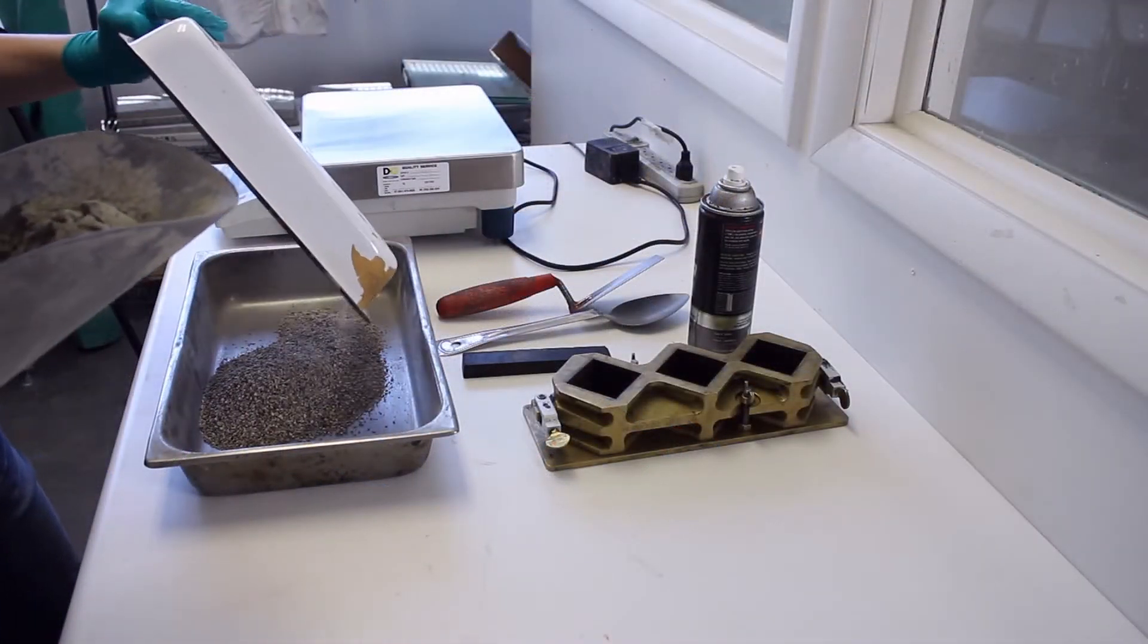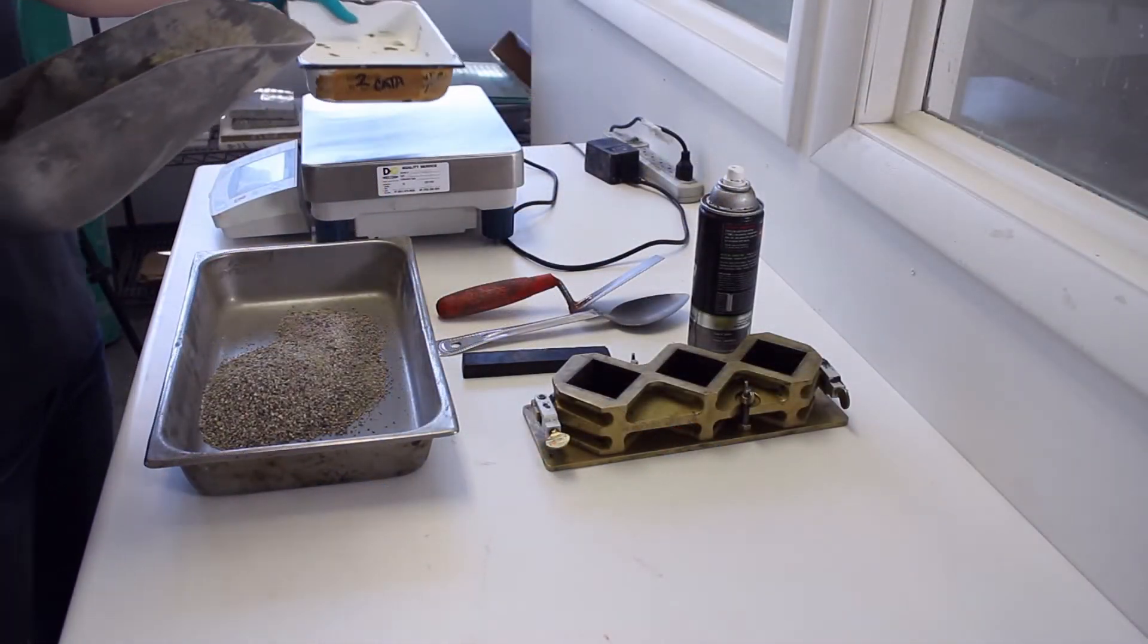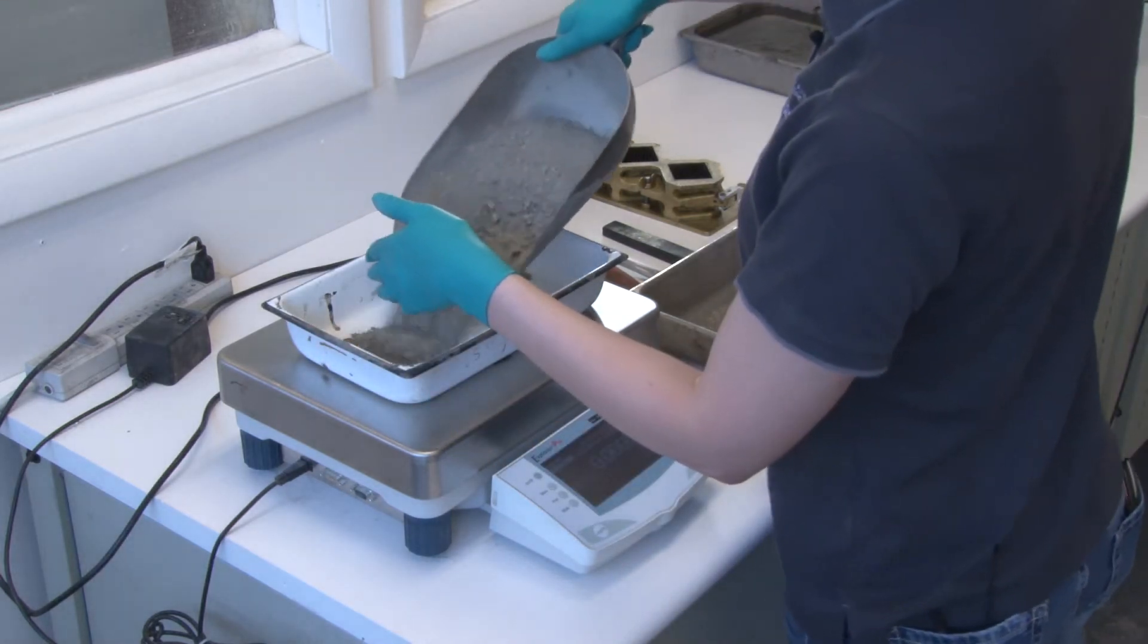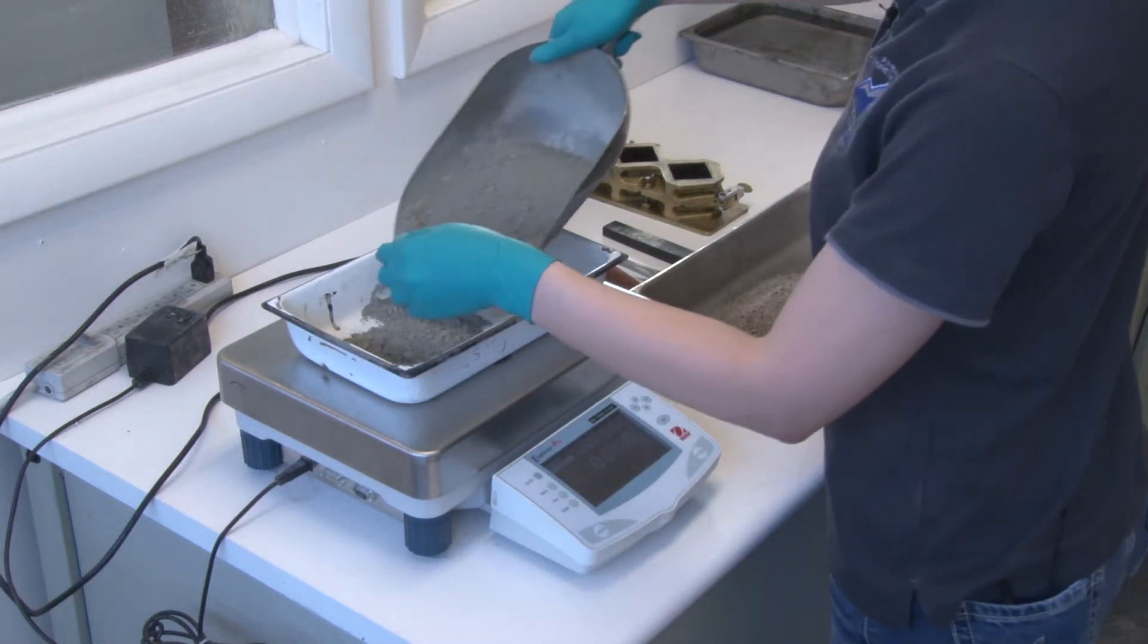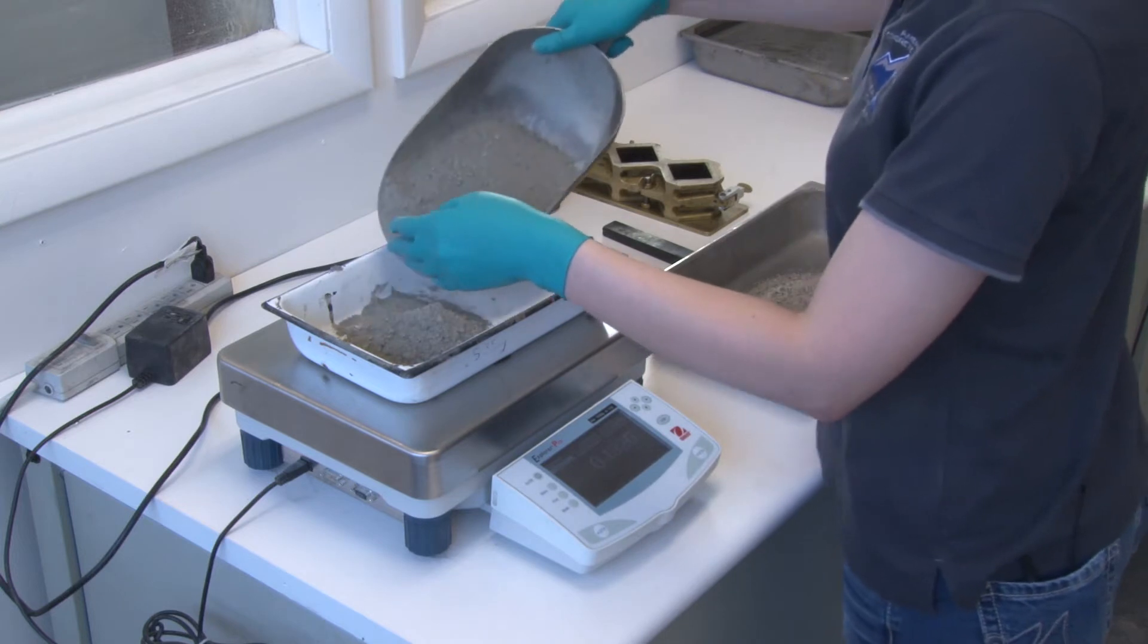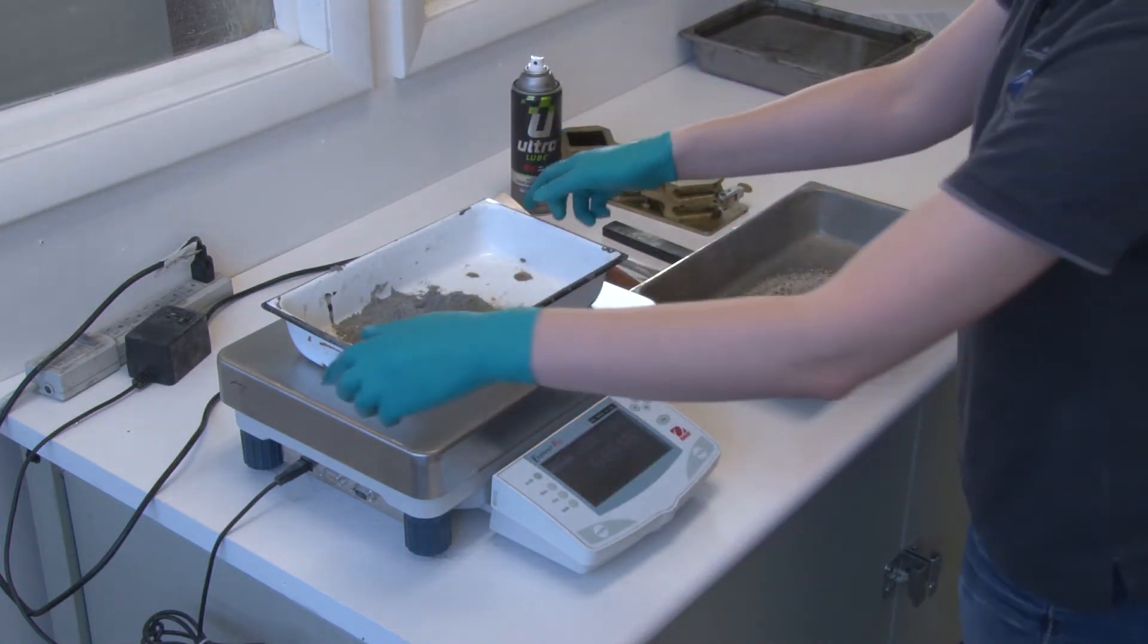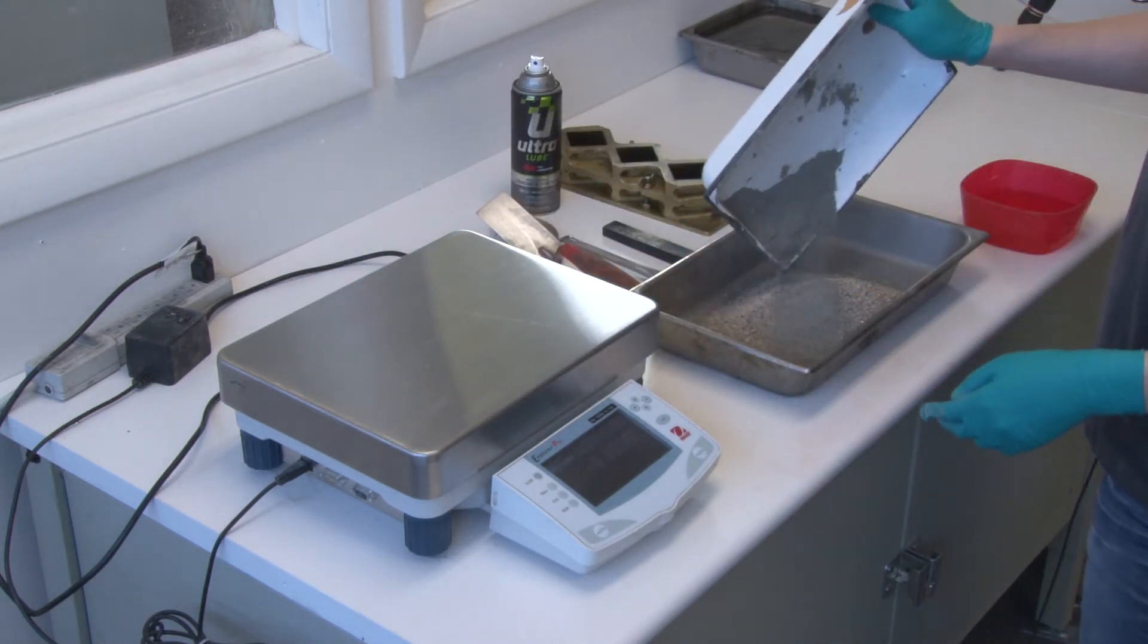Dump the sand into our mixing location. Re-tare it if needed. The amount of cement you have to calculate in advance based on the standard. And then you get water as the last item. Put the cement in here. Make sure to get all of it.